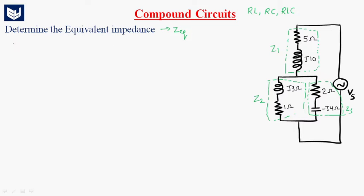See here, what is Z1? Z1 is equal to 5 plus J10 ohms. What is Z2? Z2 is 1 plus J3 ohms. Similarly, Z3 is equal to 2 minus J4 ohms.